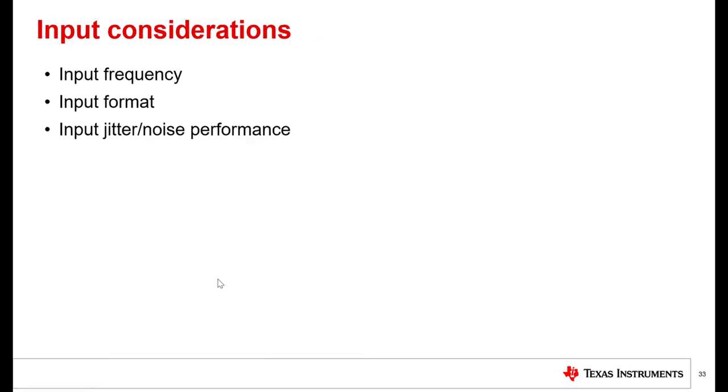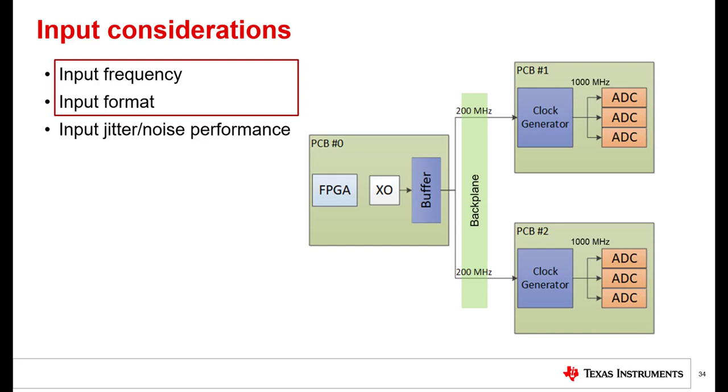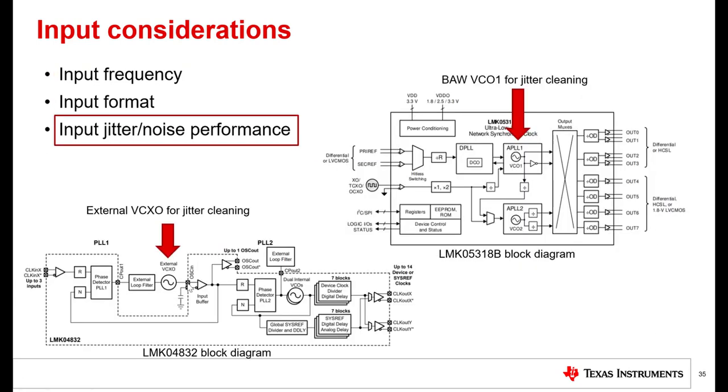Now let's think about input considerations. The first stage of a clocking device must accept a clock coming from another board, another system, or self-driving clock source such as an oscillator. Similar to the output clocks going to the clock receivers in the system, the device chosen to receive the input clock must also be compatible to the input signal swing. In this example, the clock generators of PCB number 1 and PCB number 2 must both be able to accept 200 MHz output from PCB number 0. The input frequency must fall within the range of acceptable input frequencies for the clock generator's input drive, and it must be compatible to the common mode voltage and the frequency swing of the buffer's output.